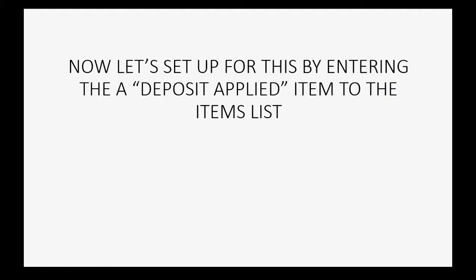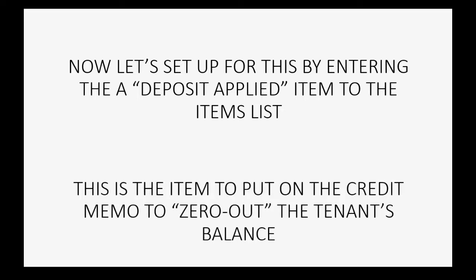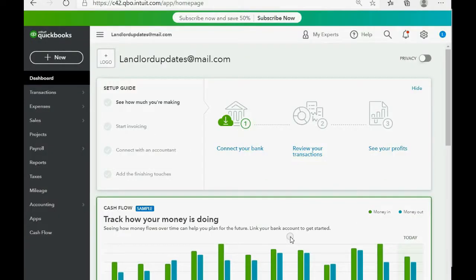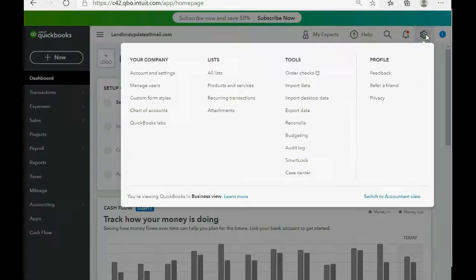Now let's set up for this by entering a deposit applied item to the items list. This is the item we will put on the final credit memo in order to zero out the tenant's balance. Here we are in QuickBooks Online — we click the cog wheel and go over to the list of products and services.